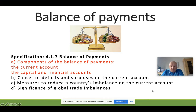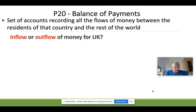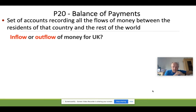Let's start with a short activity. Open the PowerPoint I've sent you and have a go at completing the inflow and outflow of money from the UK. But first, let's look at the definition of the balance of payments: it is a set of accounts which record all flows of money between the residents of a country and the rest of the world — money coming in and money going out. We'll do one example together and then I'll give you time to complete the rest yourself.